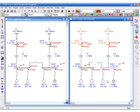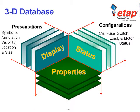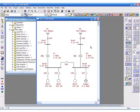The third piece is data revisions. On our original one-line diagram we can drop down our revision list, which includes base plus 15 revisions by default.